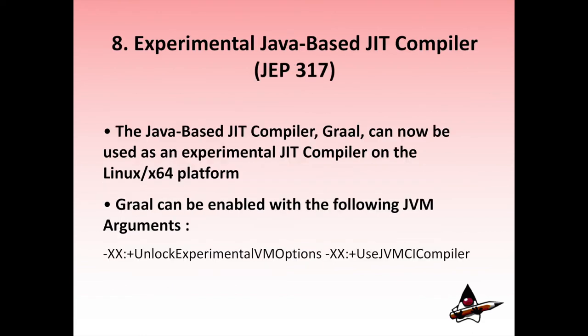Feature 8: Experimental Java-based JIT Compiler, in JEP 317. This feature enables the Java-based JIT compiler, Graal, to be used as an experimental JIT compiler on the Linux x64 platform. Graal was already added back in Java 9, but now you can enable it with the JVM arguments displayed on the screen. Graal is a new Java-based JIT compiler and is the basis of an experimental ahead-of-time compiler. Keep in mind that it is in an experimental stage and should not be used in production.